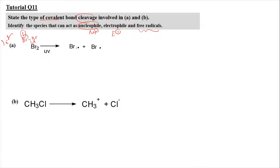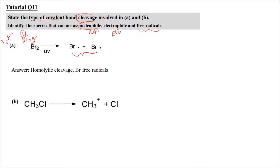So bromine atom will get one electron and bromine atom will get one electron. The type of bond cleavage here is homolytic cleavage, and this produces a Br free radical.